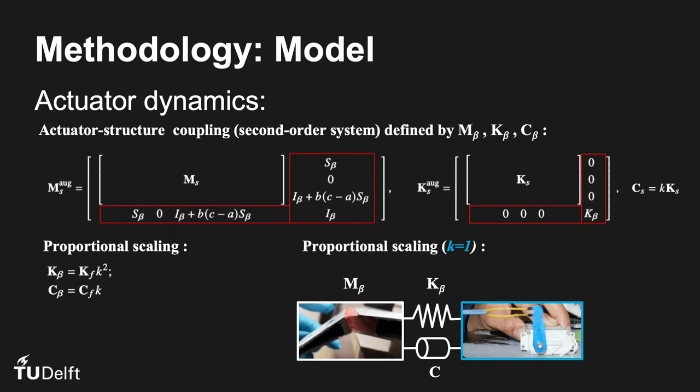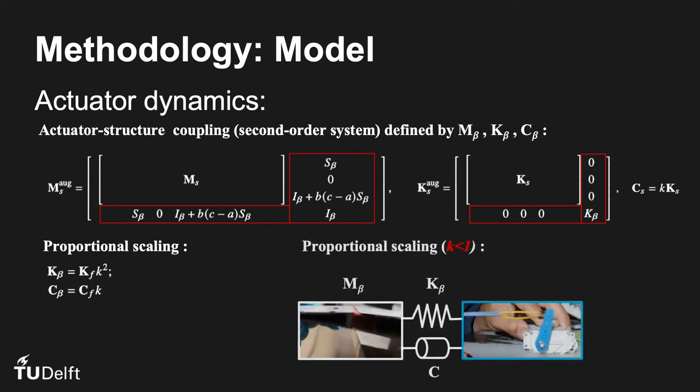We can visualize the system via the simplified animation shown for nominal k equal to 1. When the scaling parameter is below 1, k below 1, the actuator becomes proportionally faster and more responsive, potentially allowing faster response to disturbance.